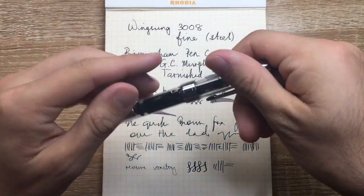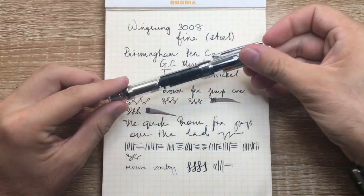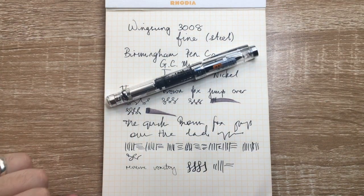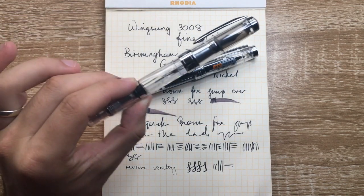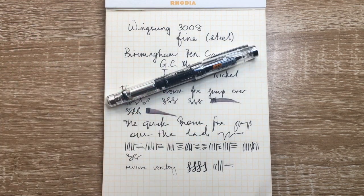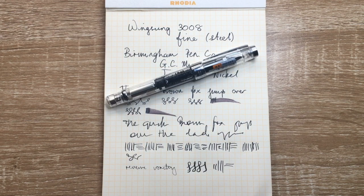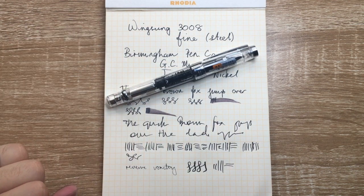But that was the Wingsung 3008. I think it's a really interesting pen. I think they write really well. If you are a pen user who can't justify buying a Twsbi 580 or 580 ALR. But you want to see if it's the sort of pen you would enjoy. Try one of these. You're not going to break your budget.